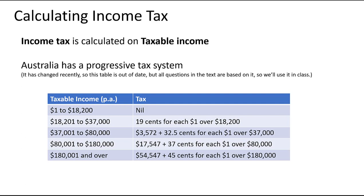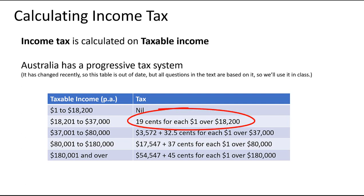If you earn more than $18,200, you need to pay income tax. You can see different rows called tax brackets. Someone earning between $18,201 and $37,000 is in the first tax bracket and they pay $0.19 for every $1 over $18,200. The first $18,200 they still don't pay any tax on — it's only for everything past that amount. So if they earn $18,210, they'd only pay $0.19 for each dollar of that $10.